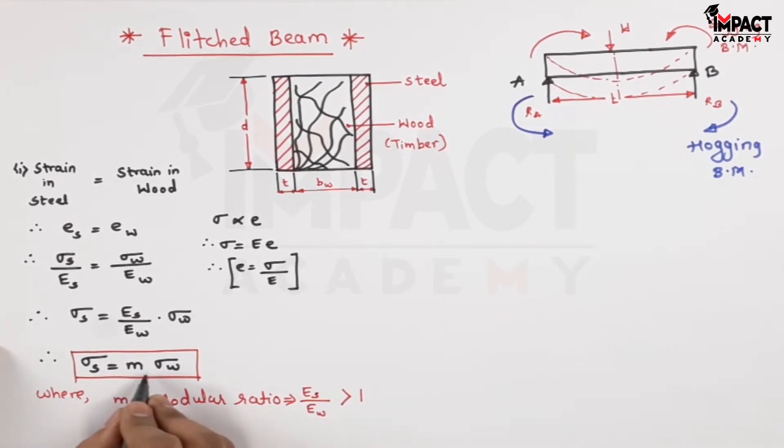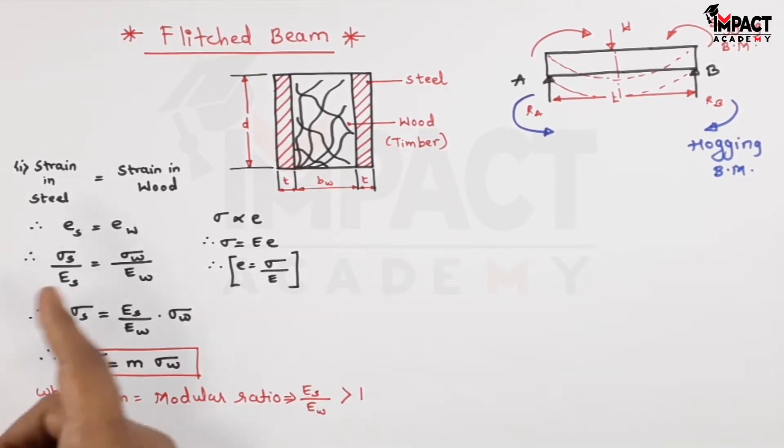Next after that I can also say that since the modular ratio is greater than one, whatever the stress is there in steel that would be greater than that in wood because modular ratio is greater than one. So this was one of the conclusions from the flitched beam.